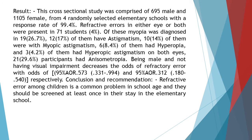Results: this cross-sectional study comprised 695 male and 1,105 female students from four randomly selected elementary schools, with a response rate of 99.4%. Refractive errors in either eye or both were present in 71 students, 4%. Of these, myopia was diagnosed in 19 (26.7%), 12 (17%) had astigmatism, 10 (14%) had myopic astigmatism, 6 (8.4%) had hyperopia, and 3 (4.2%) had hyperopic astigmatism on both eyes.